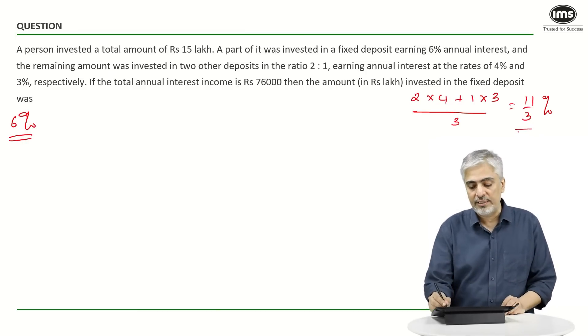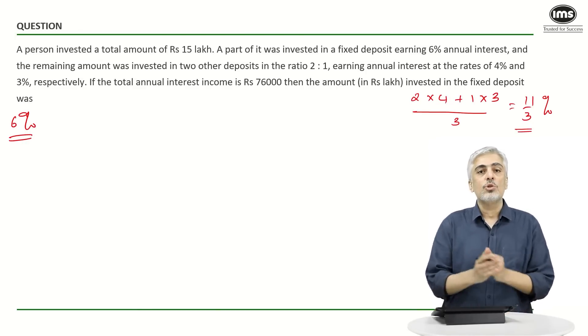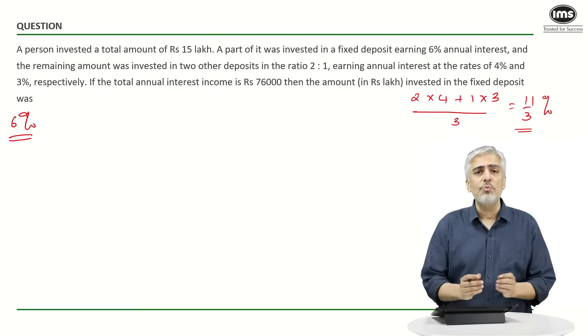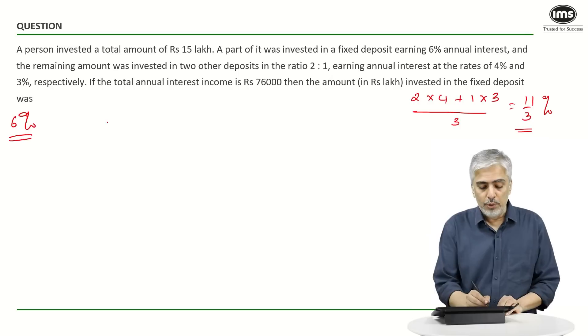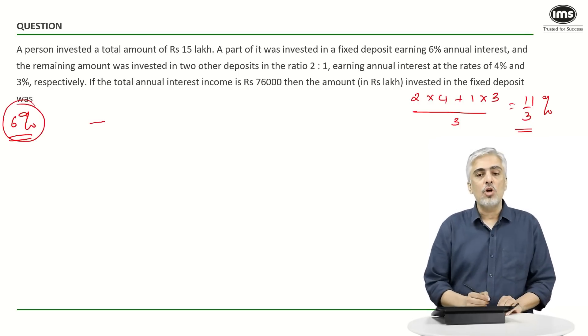Now let's understand. Can I say I have just got two parts? He has invested some amount at 6% and some other amount at 11/3%. So can I use alligation? We're going to make use of alligation a lot in a lot of questions, so pay attention carefully.